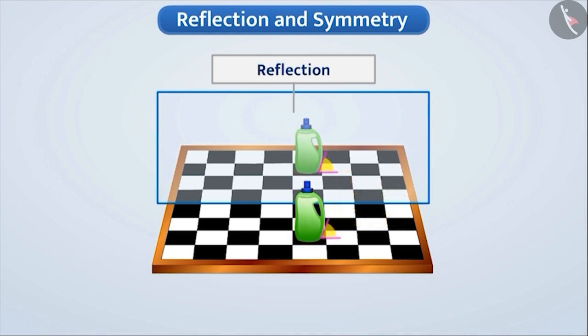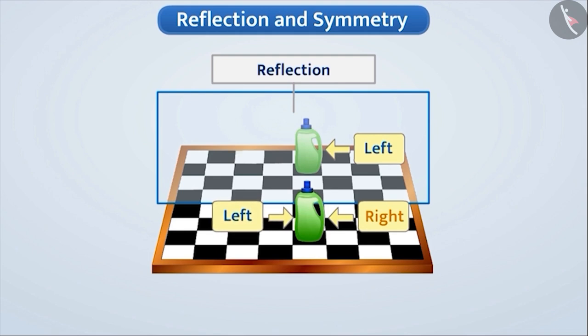Like length, if we talk about angles, the angle of the reflection and the angle of the real object are also equal. However, in one aspect there is a change. The right part of the object appears to be left in its reflection and the left part of the object appears to be in the right of the reflection. This is called lateral inversion.